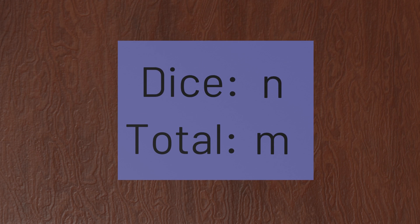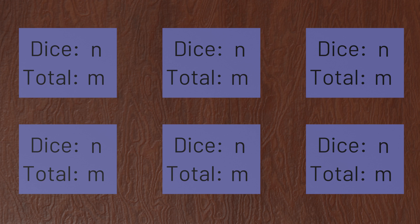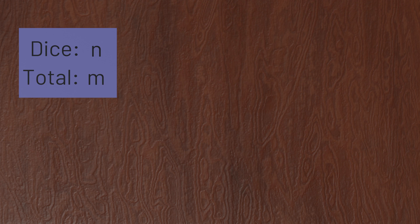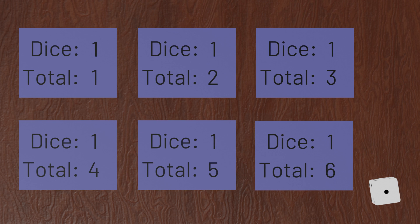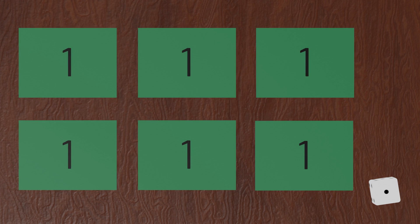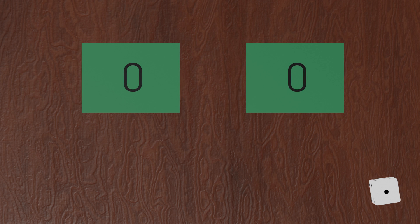Another common strategy for designing algorithms is to think about them recursively — solving our big problem by breaking it down into similar, smaller problems. We are trying to figure out how many ways we can use n dice to roll a total of m. Let's start with the easiest case, where n=1, meaning we only roll one die. For all values of m from 1 to 6, there's exactly one way to roll that value. For all other values of m, the answer is 0 — there's no way using one die to get any total outside of 1 through 6.